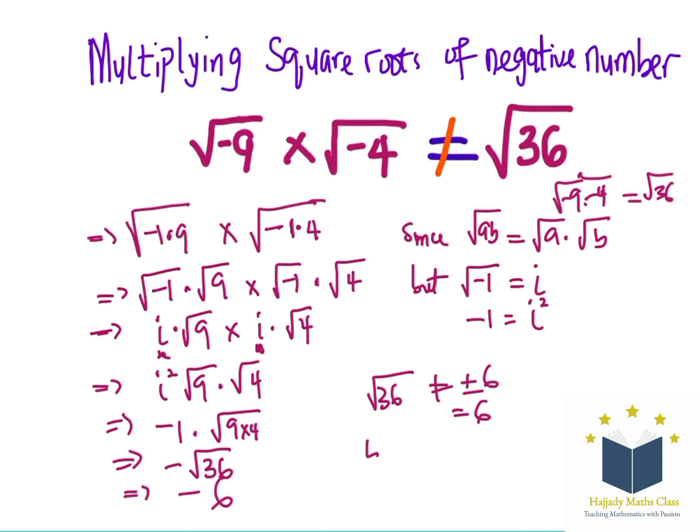Alternatively, we can say that if you have x squared to be 36, then we can say that x is going to be plus or negative 6.